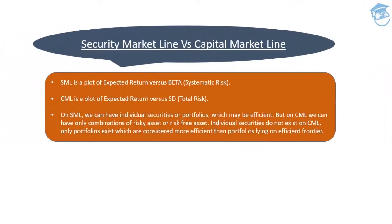Next: Security Market Line (SML) versus Capital Market Line (CML). The Security Market Line is essentially an equation giving a plot of expected return versus beta — that is, systematic risk — and provides understanding about individual securities. The Capital Market Line, on the other hand, gives you the combination of risky assets and risk-free assets, and is concerned with portfolios. SML covers individual securities or portfolios; CML covers the overall market portfolio.